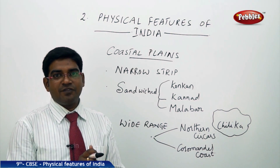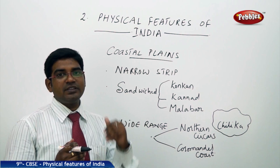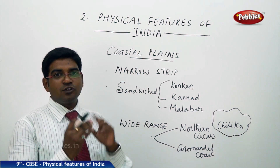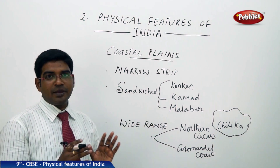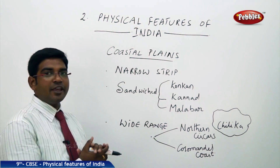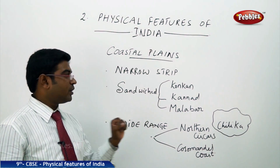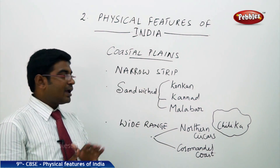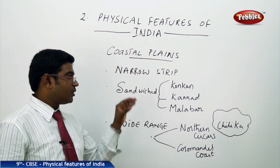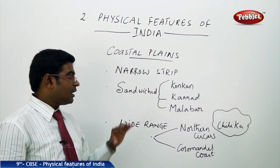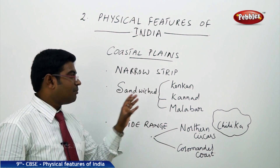Moving on to the western side first, it has been sandwiched between the Arabian Sea and the Western Ghats, so it is a very narrow strip. It is called with different names in different regions. From Mumbai to Goa, it is known as the Konkan Coast. From Goa to the Kerala region, it is known as the Karnad Plain. And from there downwards, it is known as the Malabar Coast.